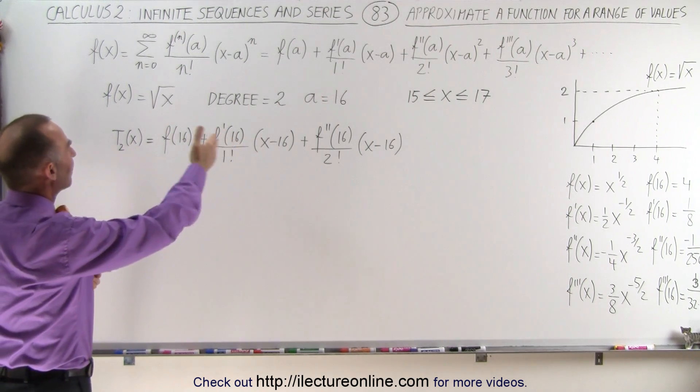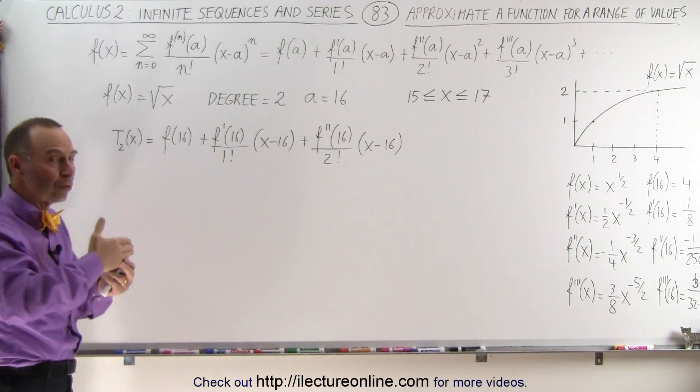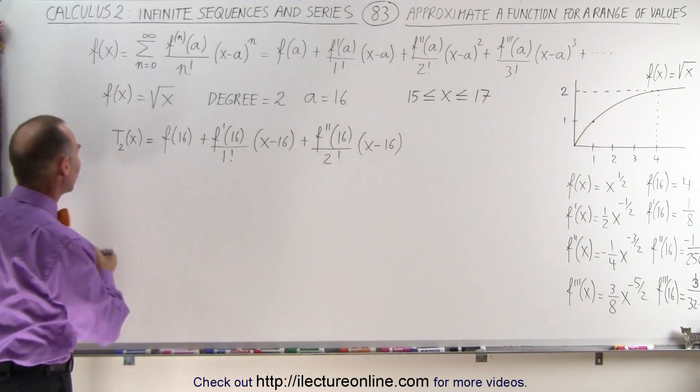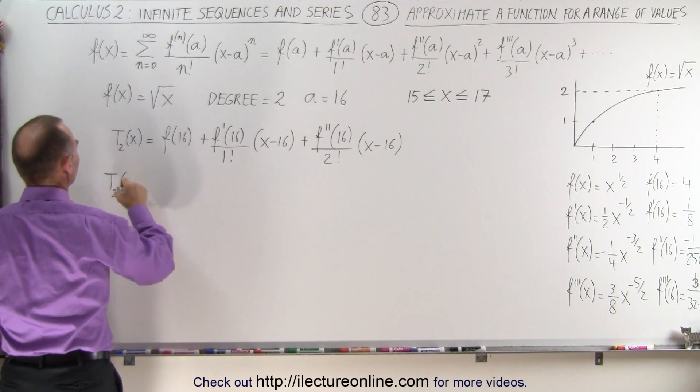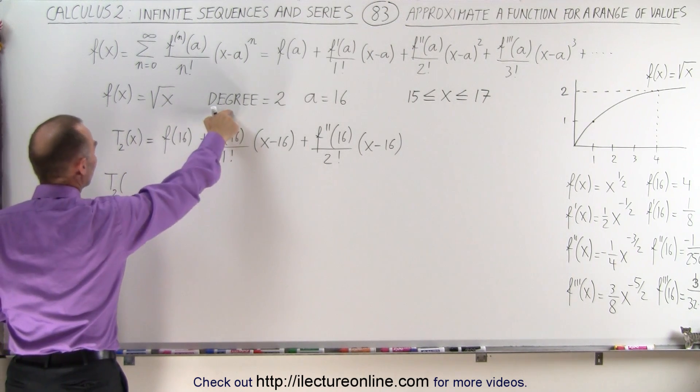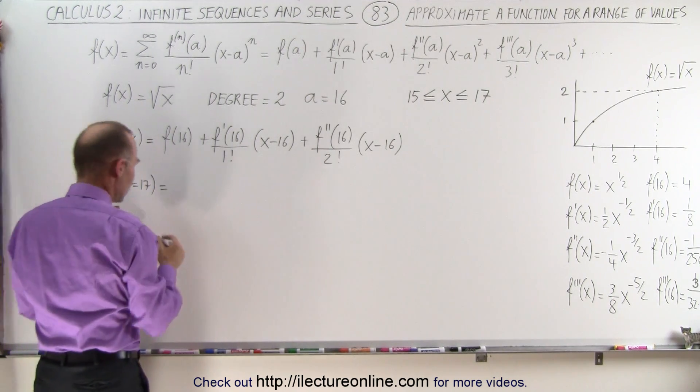We're going to first evaluate the expansion here for x equals 17. So we're going to use the upper limit and then the lower limit and see what we get. So the Taylor series expansion for the first three terms, that means degree 2,